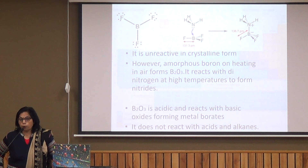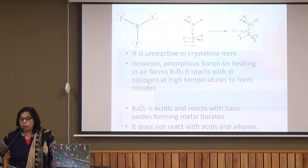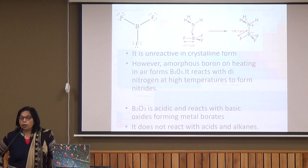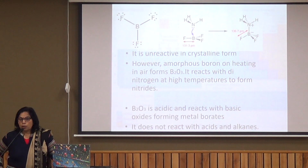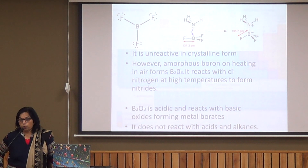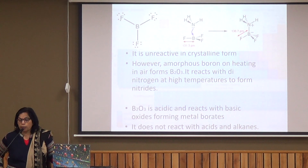Boron forms only oxides and nitrides at very high temperatures. Similarly, aluminium also makes oxides easily. Due to this, aluminium is used to make transmission cables because, in the presence of air, aluminium forms a protective film of oxide on its surface, making it resistant to corrosion.